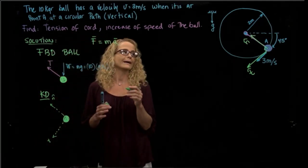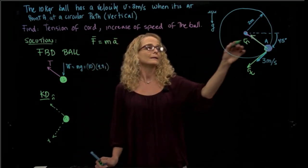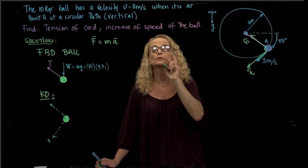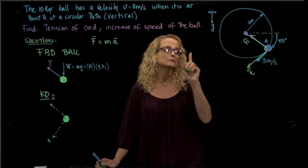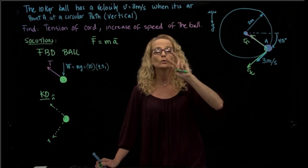And what accelerations are involved? So we have to remember that any time we have a circular path, we have the acceleration have two components. The velocity has only one component tangential to the path. But our acceleration has two components.